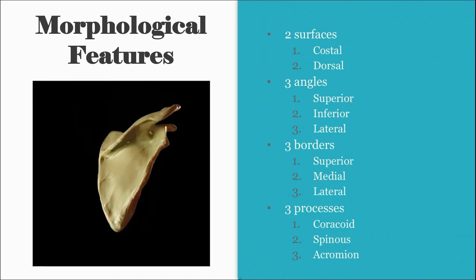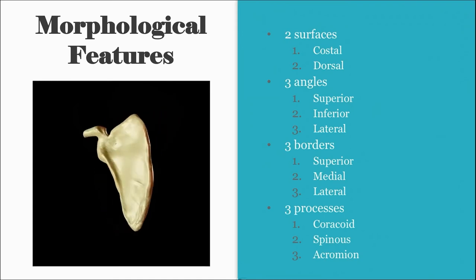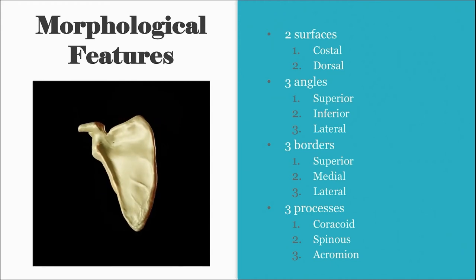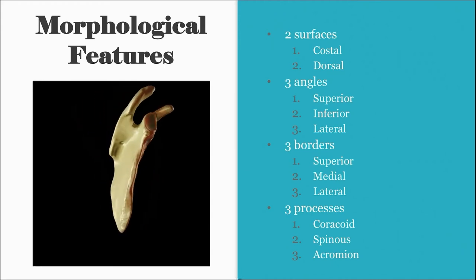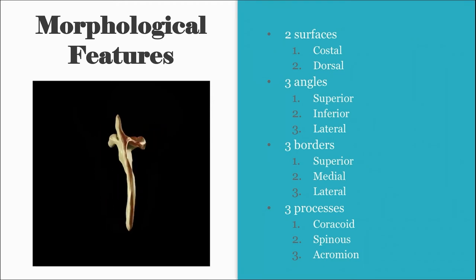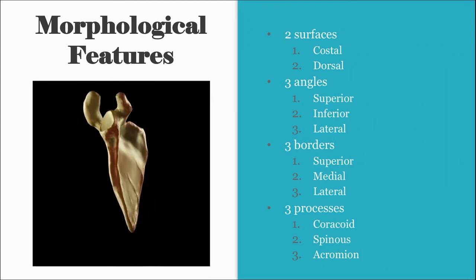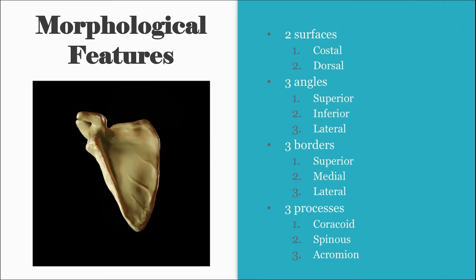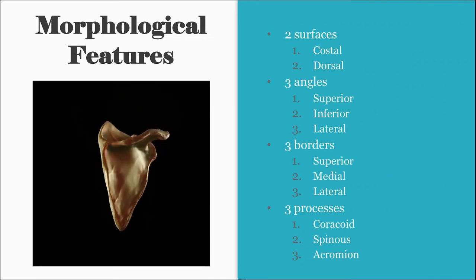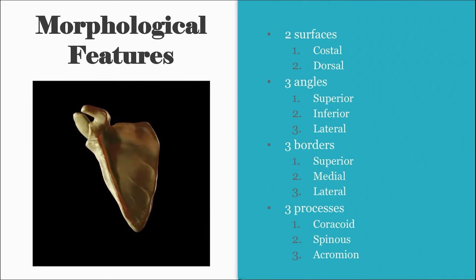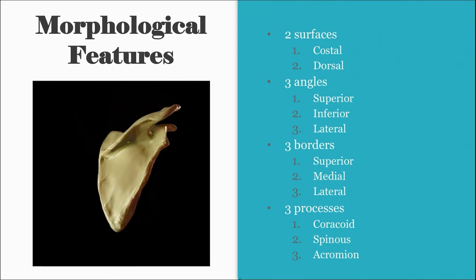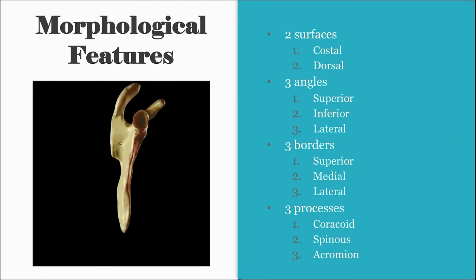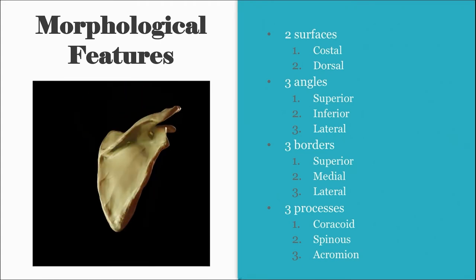The scapula also consists of three processes: the coracoid process, shaped like a crow's beak; the spinous process or spine of the scapula, which has a crest with a posterior border consisting of upper and lower lips; and the acromion process, which juts out above and laterally to form the tip of the shoulder. 'Acro' means the peak or summit, and 'omos' means shoulder — that's how we get the acromion process. Now let's head straight to the 3D lab.